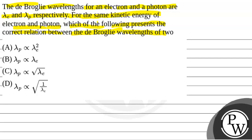We will solve this question. First of all, we will see what the key concept used to solve this question will be. The key concept is energy equal to hc by lambda. This is for the energy of a photon, so energy of photon will be equal to hc by lambda of photon.